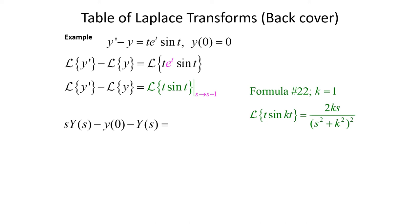This form matches what we're dealing with if our k value equals one. So we take the Laplace transform of t sine of t using this formula, plugging one in for k. That gives us 2s over (s squared plus one) squared, and we're going to translate that from s to s minus one.